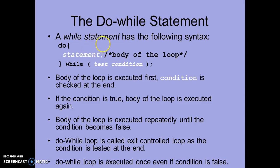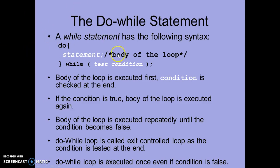First, the body of the loop is executed. Once the body is over, the condition is tested. If the condition is true, it will again execute the body of the loop, and the process will continue until the condition is false.